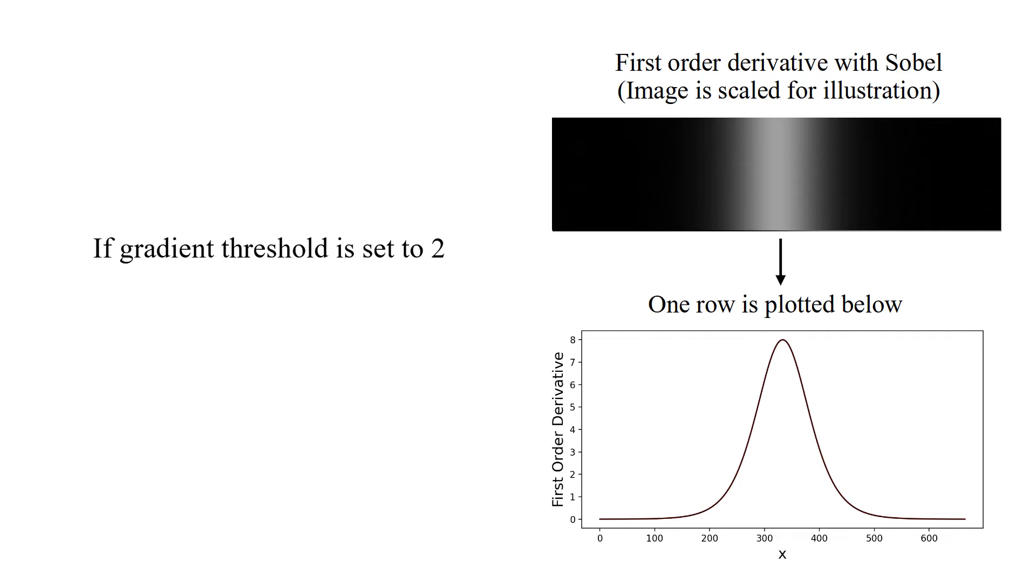One row of first-order derivative is plotted below. If gradient threshold is set to 2, then thickness of detected edge is 168 pixels.